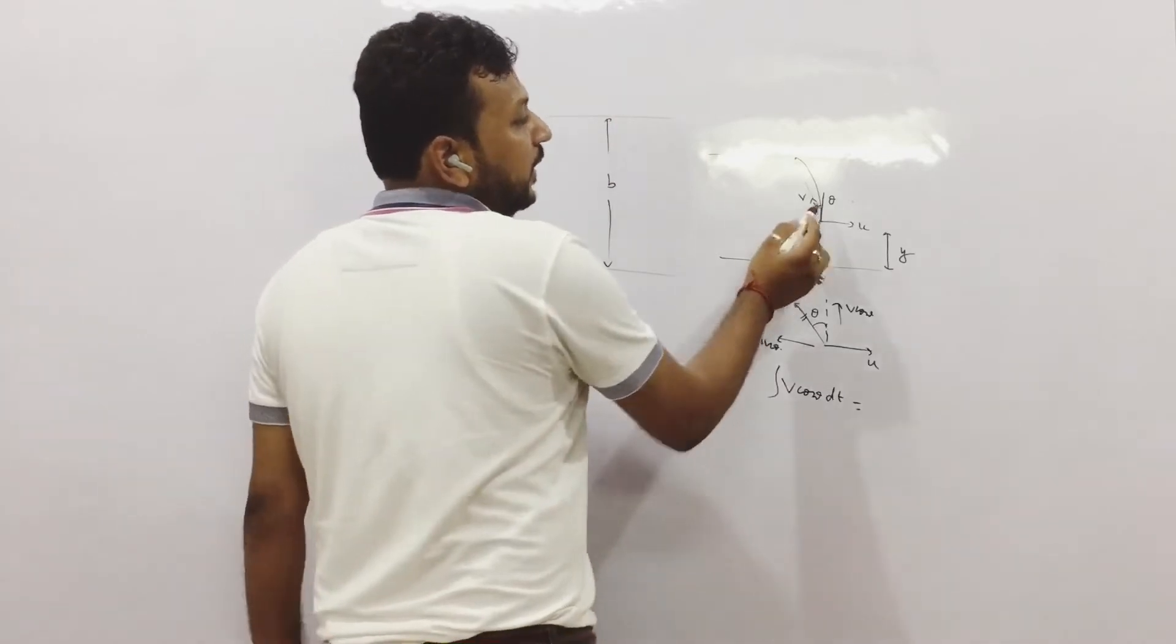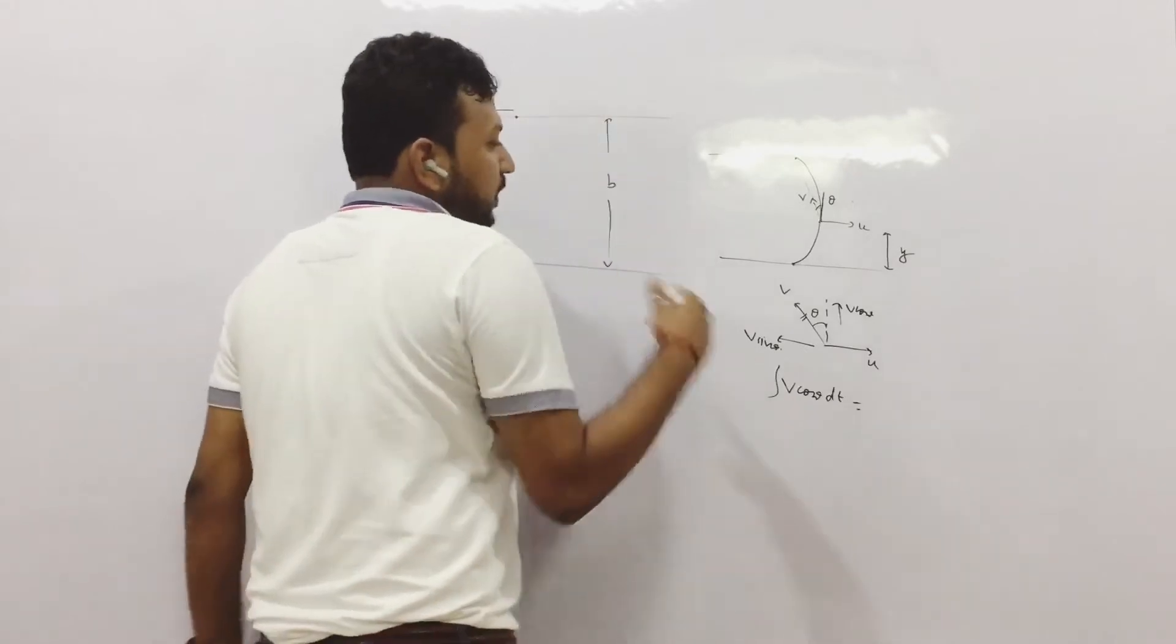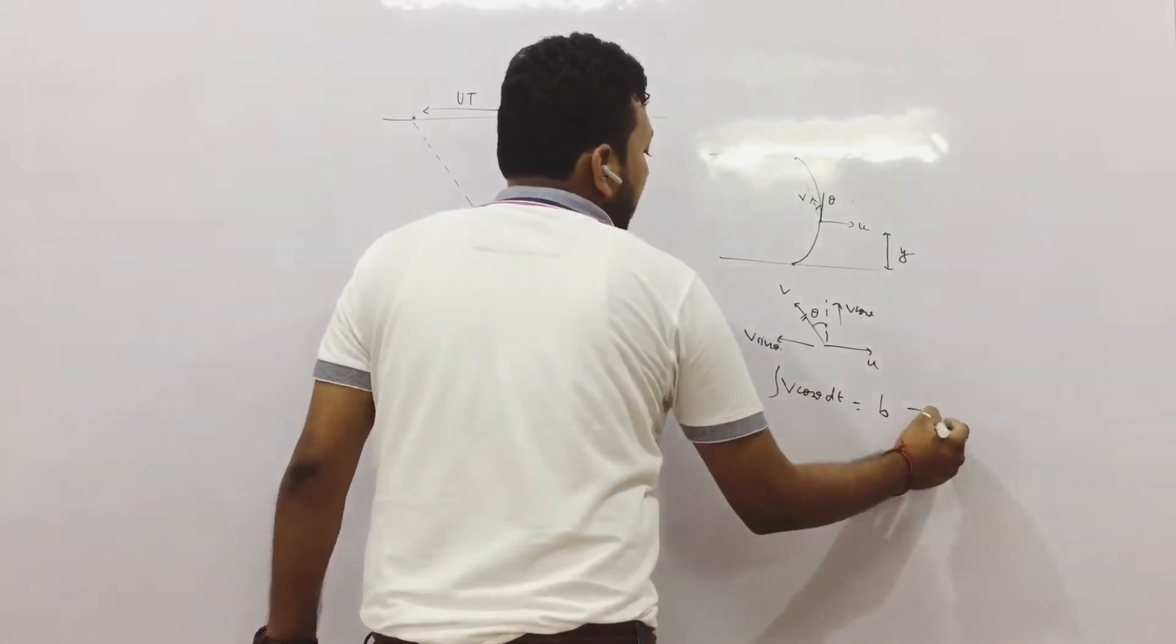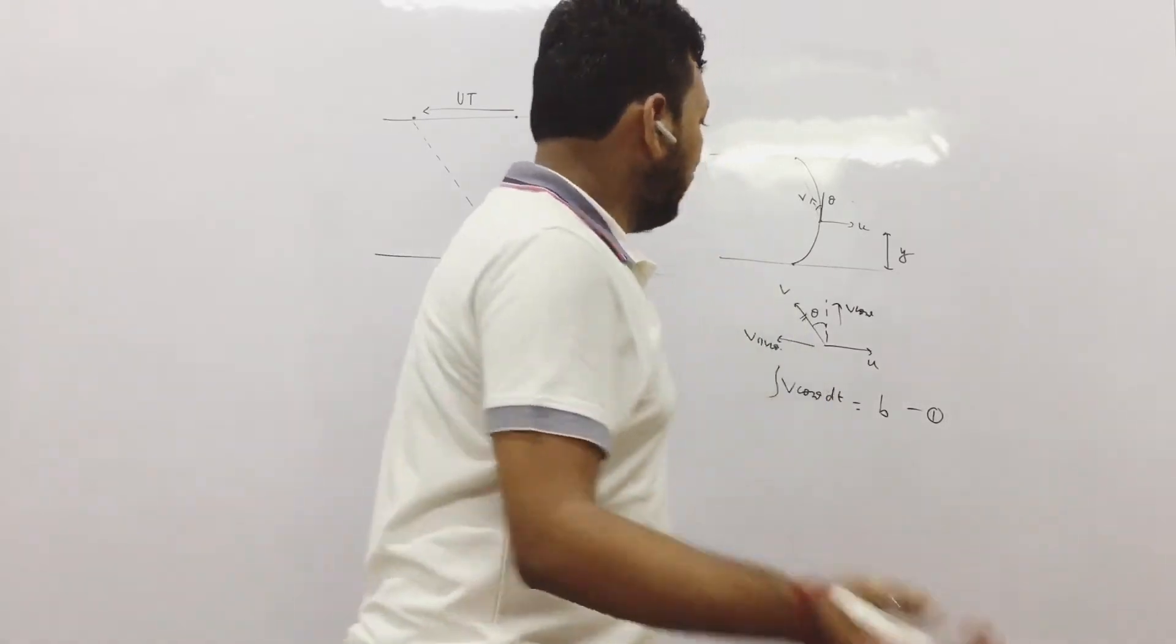So at all the instants, theta is changing, t is changing, you cannot integrate it directly. But b is constant. So this distance will be b. This is first thing and this equation you know nobody can refute, so this is a very good equation.